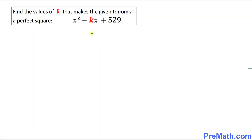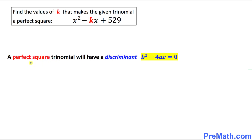Let's get started with the very first example. Our trinomial is x squared minus kx plus 529, and we want to find the value of k for which this trinomial becomes a perfect square. We know that a perfect square trinomial will always have a discriminant b squared minus 4ac equal to 0. So let's calculate the value of this discriminant, and for that we need to find the values of a, b, and c.